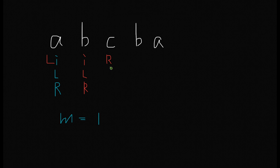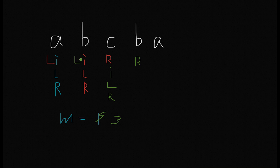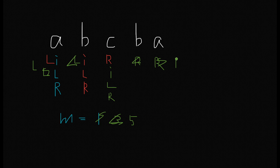When we start from 'c' (index 2), we set left = right = i. 'c' alone is a palindrome. We move left to 'b' and right to 'b' — they're the same, so the length is now three. We move again: left is 'a' and right is 'a' — same, so max length is five. Moving further puts both pointers out of bounds, so we finish.